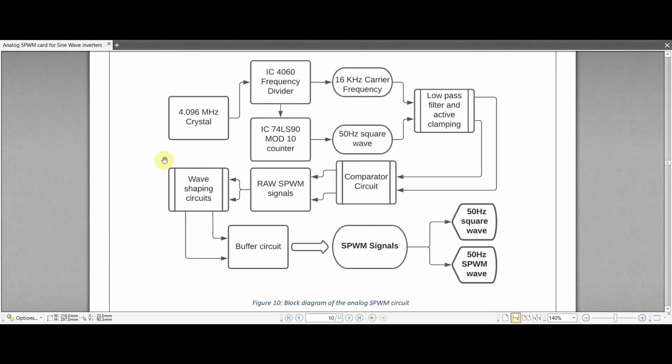This is the block diagram of the entire analog SPWM card circuit. As you can see, the clock source for this entire circuit is a 4.096 MHz crystal. This clock source is then fed into the IC4060 which is a frequency divider or a binary counter IC. The output frequency from this 4060 is 16 kHz which acts as our carrier frequency. It also generates a signal of 500 Hz which is then given to the IC7490 which is essentially a mod 10 counter. This divides the input frequency by 10 and we have our 50 Hz square wave. So the final outputs of these two ICs are the 16 kHz carrier frequency and the 50 Hz square wave.